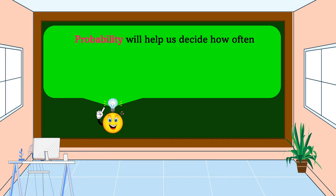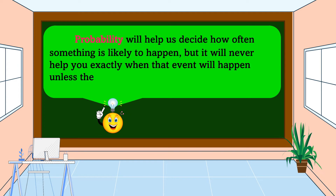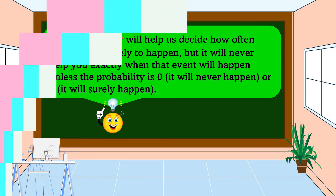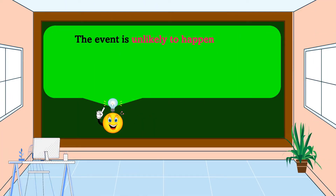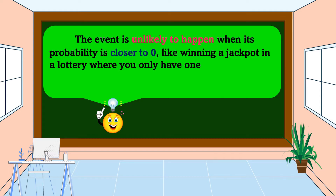Probability will help us decide how often something is likely to happen, but it will never help you know exactly when that event will happen — unless the probability is zero, meaning it will never happen, or one, meaning it will surely happen. The event is unlikely to happen when its probability is closer to zero, like winning a jackpot in a lottery where you only have one in a million chance of winning.